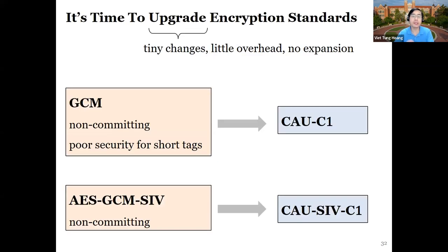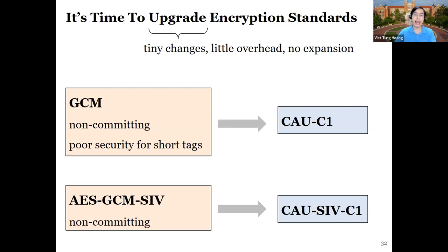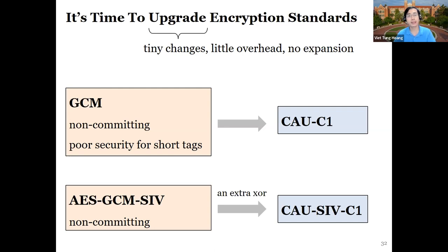Summing up, given urgent demands from many applications we believe it's time to upgrade encryption standards to committing ones. The variants in our work allow us to do that with tiny changes: there is no ciphertext expansion and overhead is very little. The transition for AES-GCM-SIV is particularly attractive because the scheme is new, there's not much legacy issue, and what you need is just an extra XOR. Thank you for listening, and I'm happy to take questions.